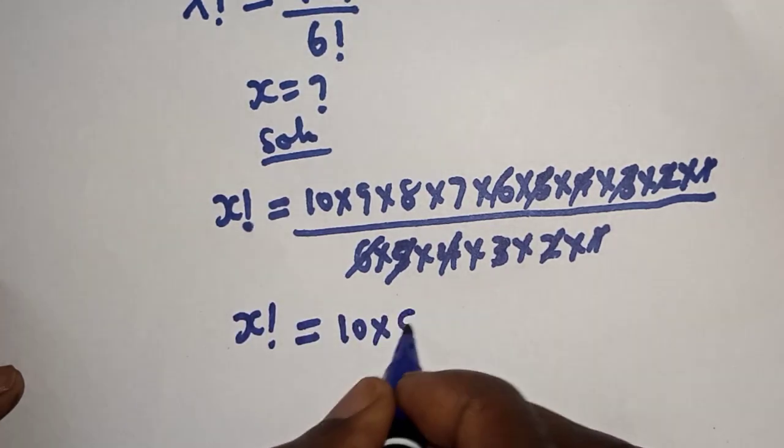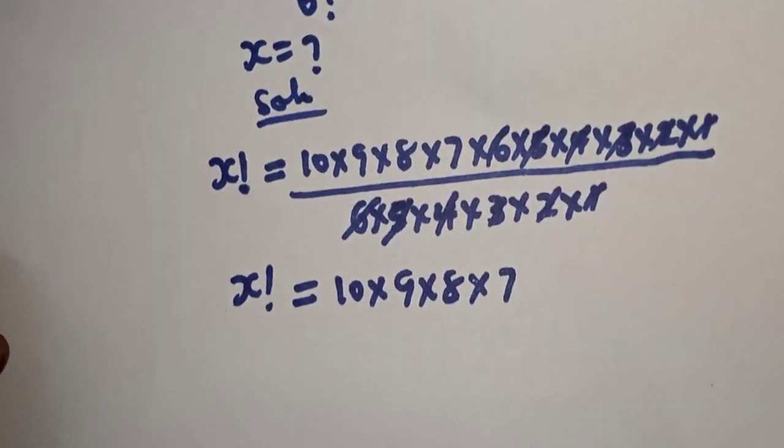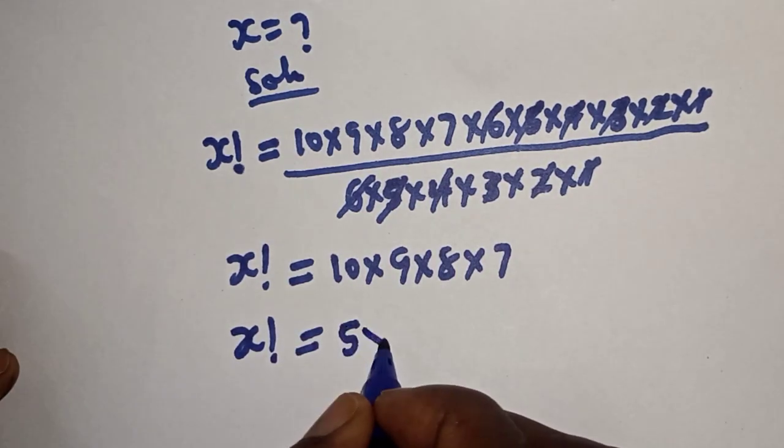10 multiplied by 9 multiplied by 8 multiplied by 7.